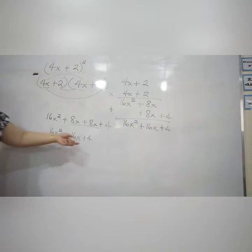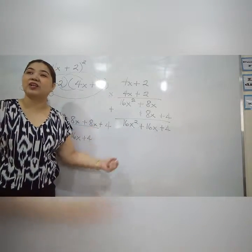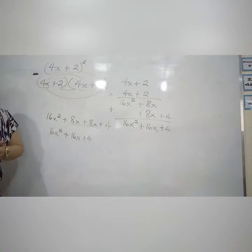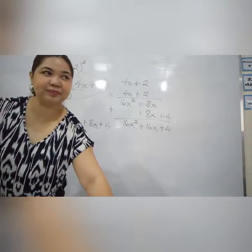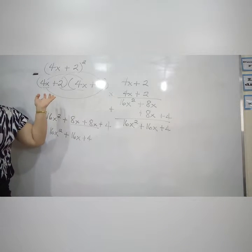So this one is the foil method, this one is the vertical method. Choose whichever method you like, the answer is the same. Okay? Who finds the foil easier? How about the vertical method? Both are fine.